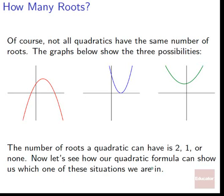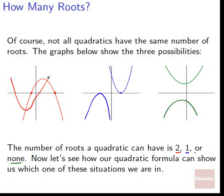How many roots does a quadratic have? Not all quadratics have the same number of roots. The graphs show three possibilities: one where the parabola intersects the x-axis twice (two roots), one where it barely grazes it once (one root), and one where it never crosses the x-axis at all (no roots). These could all flip the other way too — the idea is just about how many times the parabola cuts the x-axis.